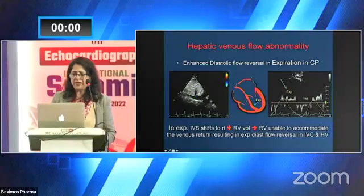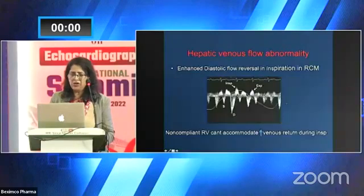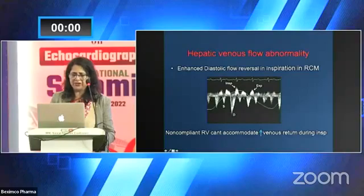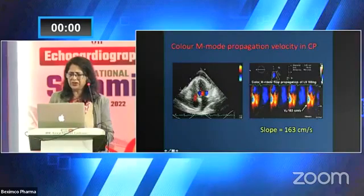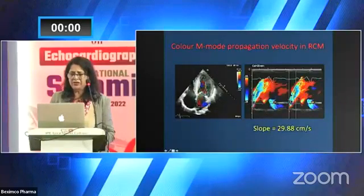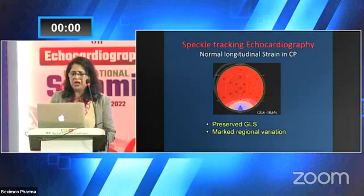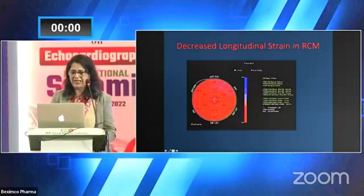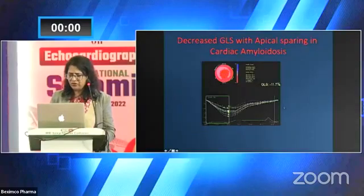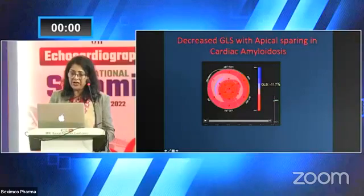Hepatic venous flow reversal in constriction occurs in expiration. In restriction, we get a low slope and low value. Speckle tracking echocardiography in constriction shows a very high, steep slope because myocardial relaxation is normal — preserved GLS — but the lateral wall shows low regional strain values while the septum shows normal. In restrictive cardiomyopathy, you get a low GLS overall. In amyloidosis specifically, you get the 'cherry on top' pattern: low GLS with relative apical sparing.